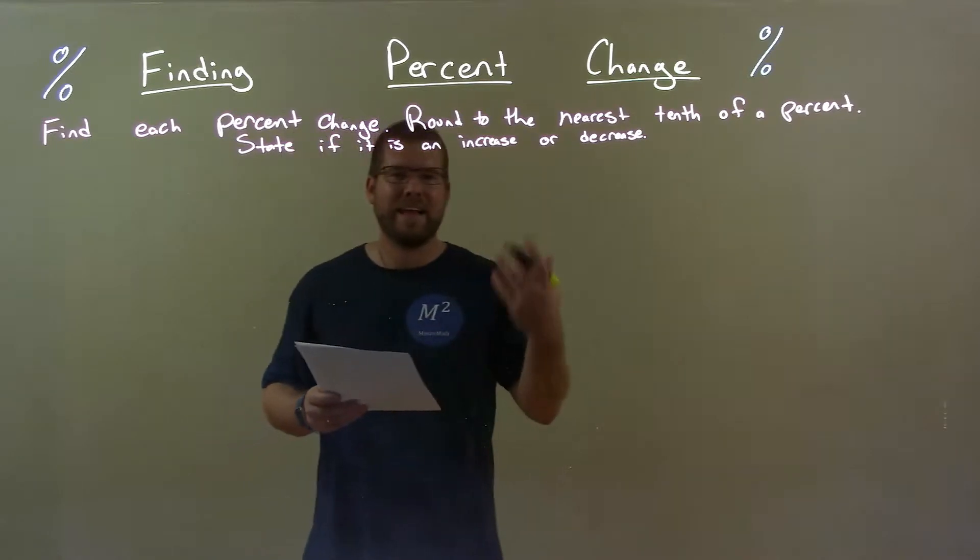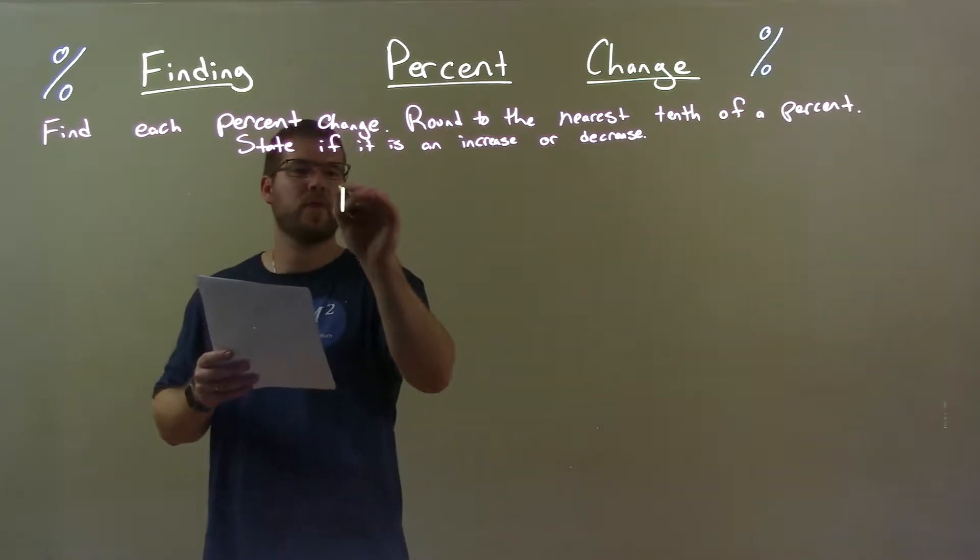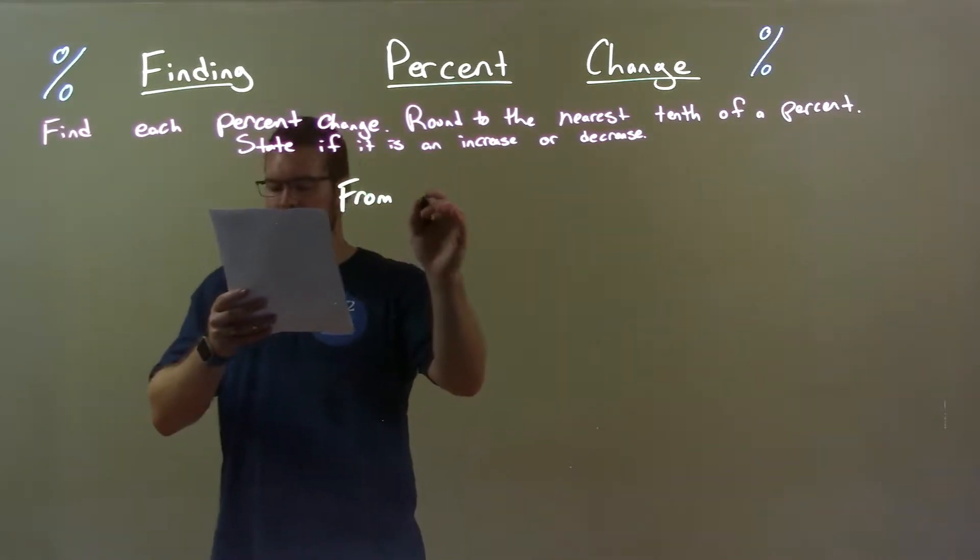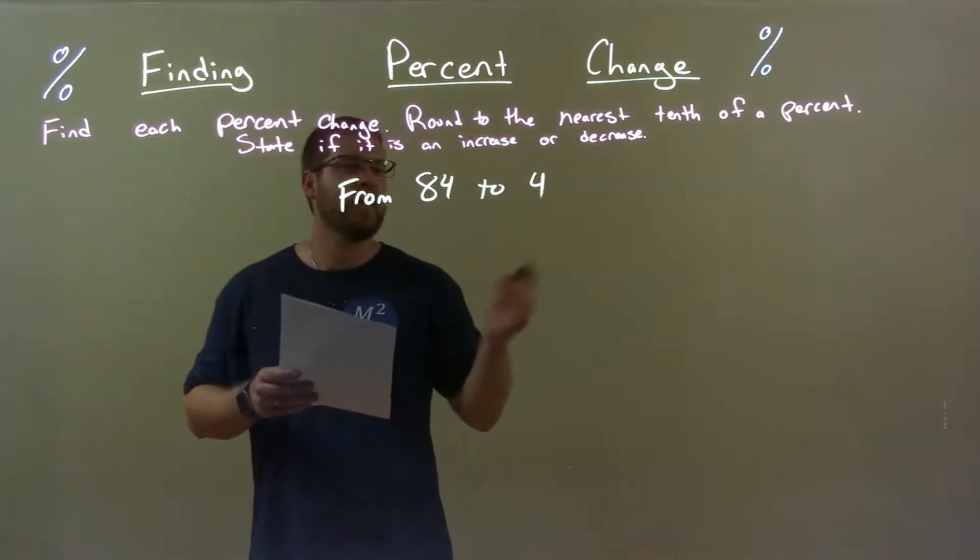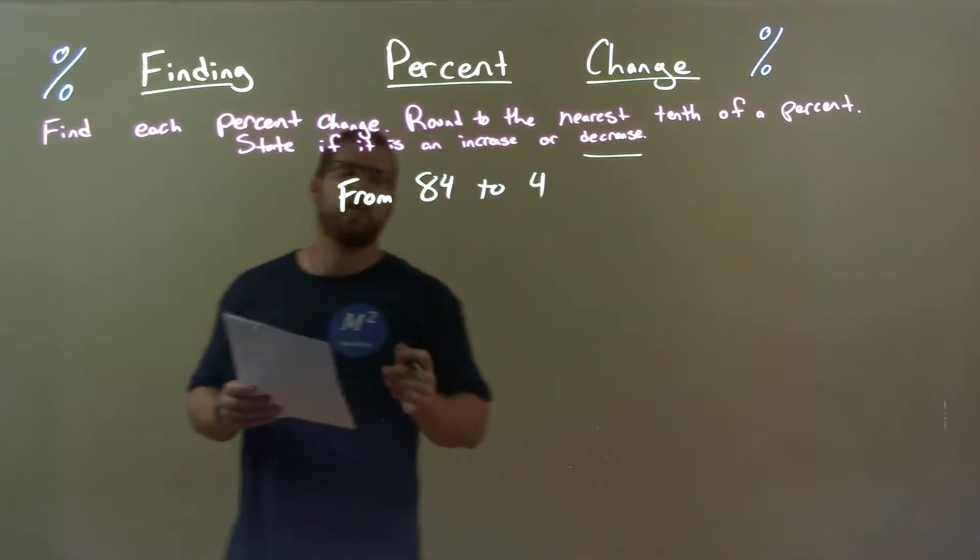So if I was given this problem, from 84 to 4, well, clearly this is what we call a decrease.